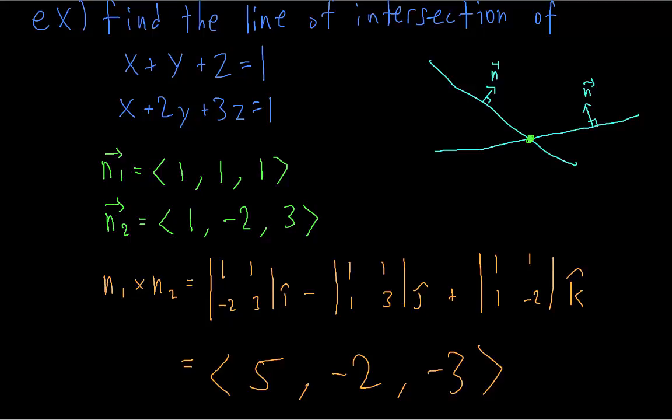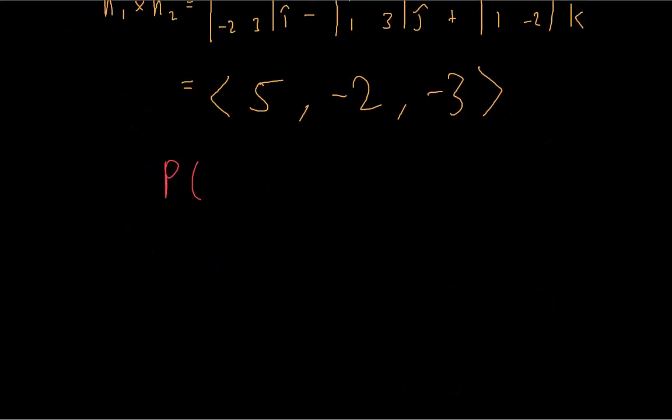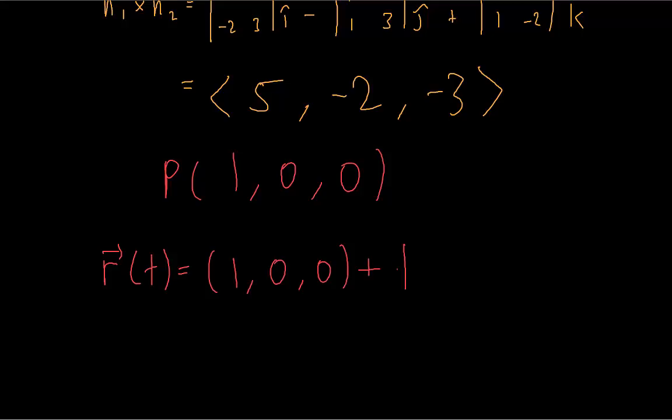We compute the cross product and take it as our direction vector. Next, we need to find a point on the line — some x, y, z that satisfies both plane equations. You can solve the system of equations or try to find an easy solution. Notice that if we set y and z both to 0, then x equals 1 in both equations. So the point (1, 0, 0) satisfies both plane equations and is therefore on the line. We then take this initial point and the direction vector to write the equation of the line.